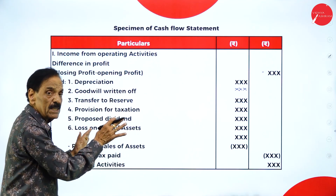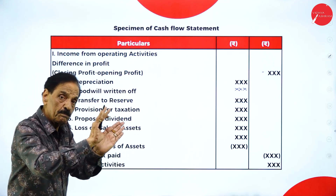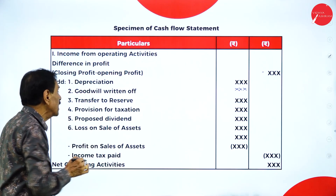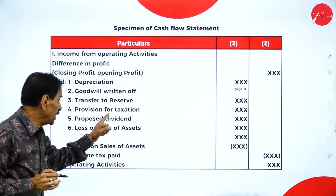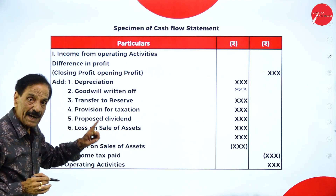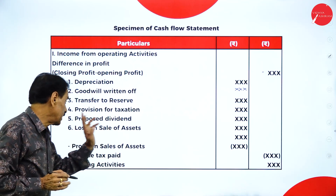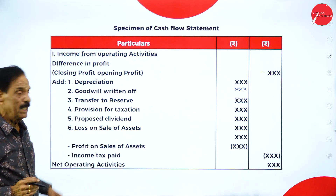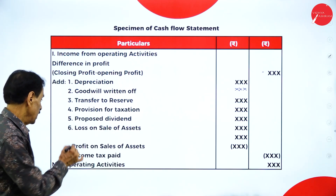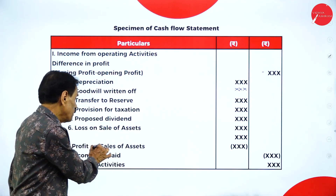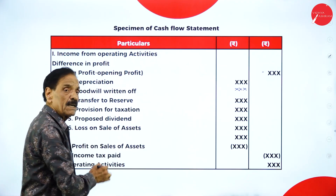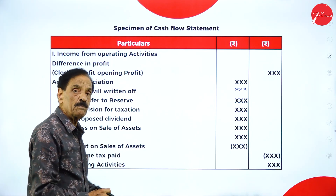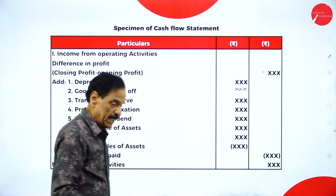To summarize the format: closing profit minus opening profit. Add back — depreciation, goodwill written off, transfer to reserve, provision for taxation, proposed dividend, loss on sale of assets. Then deduct profit on sale of assets and income tax paid. The difference is net operating activities.